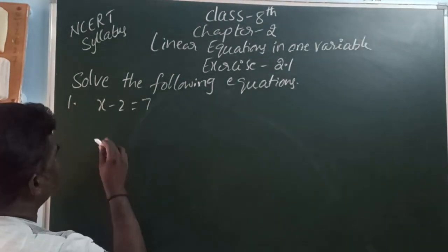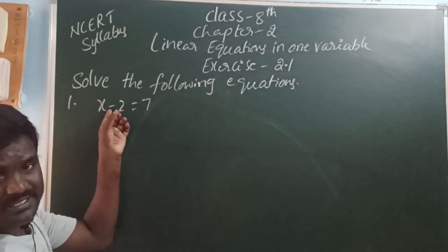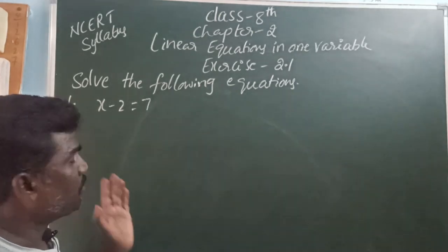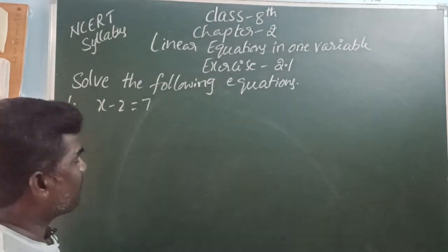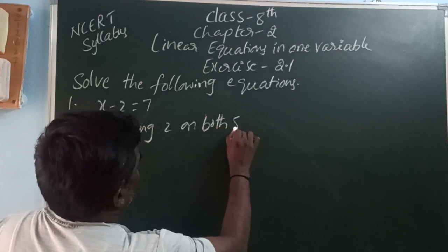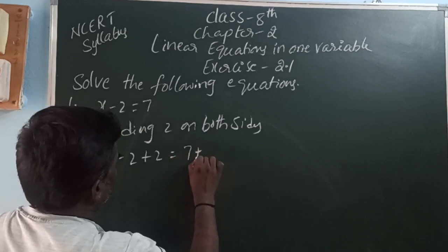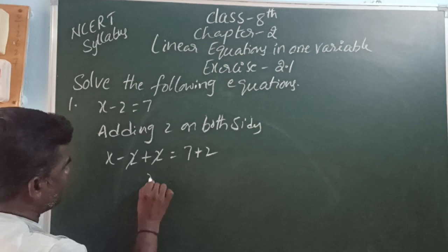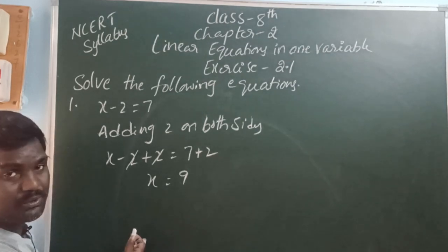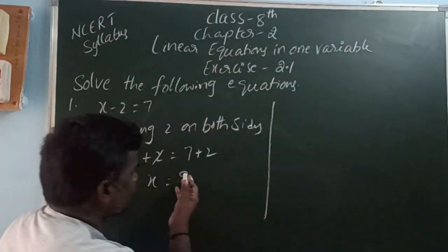x minus 2 is equal to 7. Here, you want x. The x is combined with the constant using the binary operation minus. We can eliminate the constant by adding 2 on both sides. This method is called without transform method. So, adding 2 on both sides: x minus 2 plus 2 is equal to 7 plus 2. Minus 2 plus 2 cancel. That is, x is equal to 9. So the value of the variable is 9.